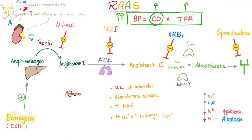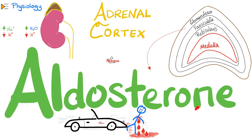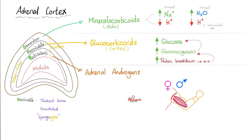How does the kidney know that blood pressure is low? When blood pressure is low, there is less blood pressure in the renal artery, meaning less blood perfusion to the kidney. The kidney has baroreceptors (pressure sensors) that sense the drop in blood pressure and start secreting renin to raise it back to normal. This is the renin-angiotensin-aldosterone system. Aldosterone comes from the zona glomerulosa of the cortex of your adrenal gland. It's called a mineralocorticoid because it handles minerals like sodium and potassium, coming from the adrenal cortex.